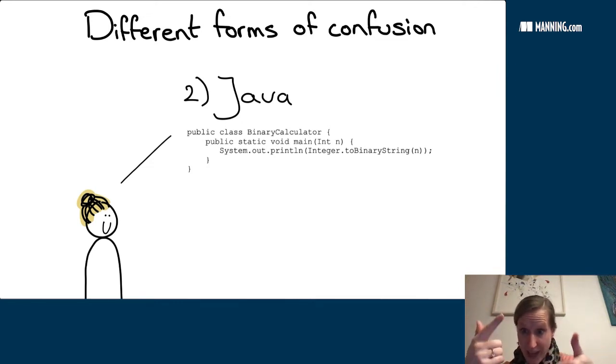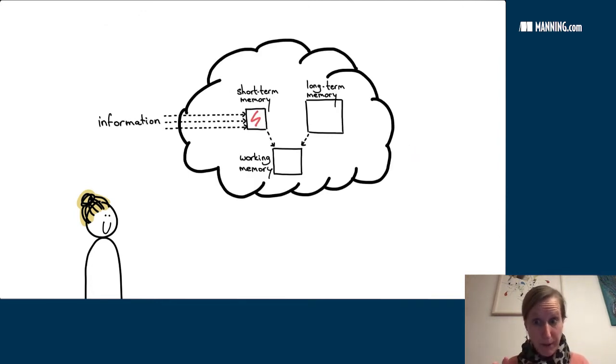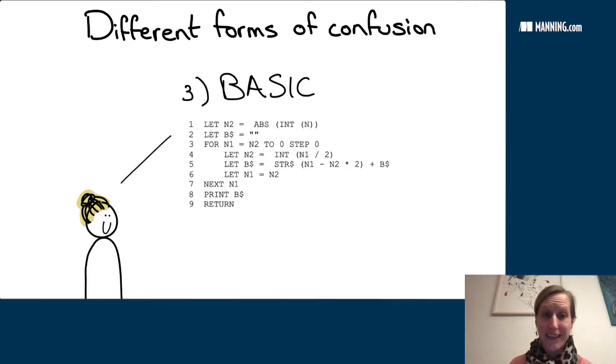Public class, binary calculator, public static void, main, int, and system out, print line, integer binary string. If you're an experienced Java programmer, you probably know that public class and public static void main is all not so important. Probably where the importance is in the binary string and binary calculation. But you can only see that if you're not all too confused by all the fluff that is there. So this program is a bit fluffy and if you're not used to it, this will be heavy on your short-term memory. Here is a third program. By the way, they all do the same. All these programs calculate the binary representation of the number n.